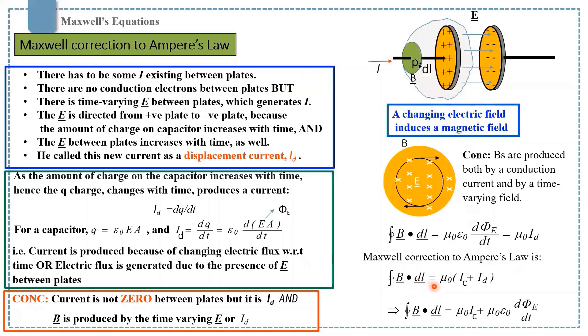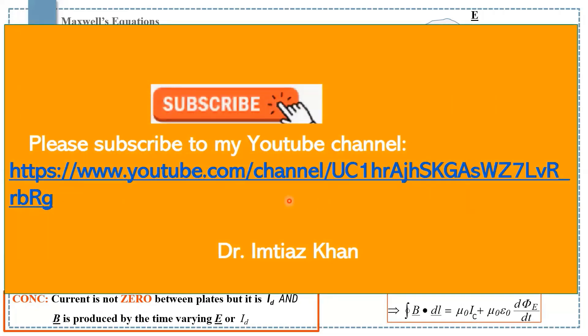He said closed integral B dot dl equals mu naught into IC plus ID, where IC is conduction current and ID is displacement current. He replaces with the term epsilon naught mu naught and derivative of phi E. This is how he modified Ampere's law and made it possible to solve such problems. Thank you all for watching this video. Please subscribe to my YouTube channel and share with your friends.